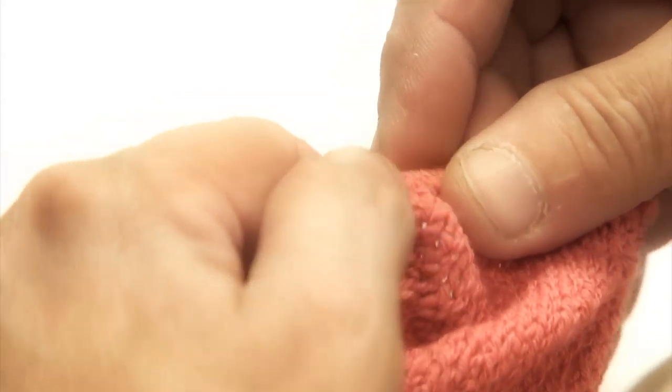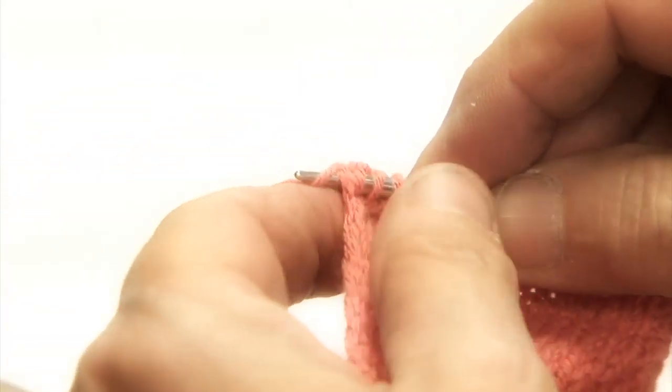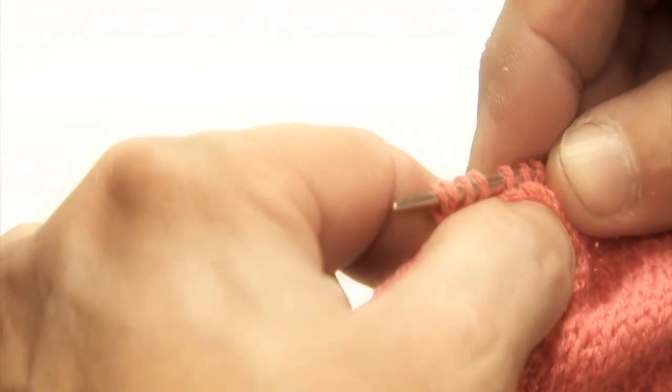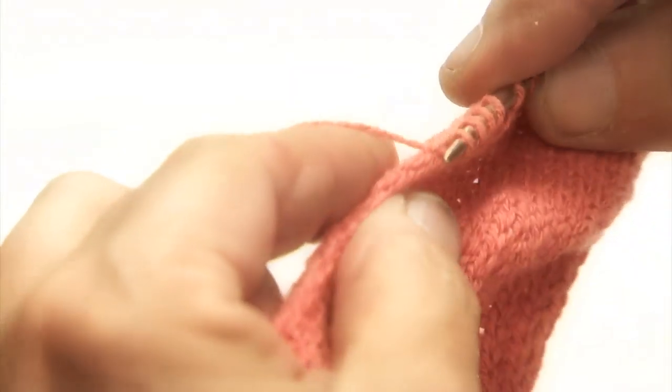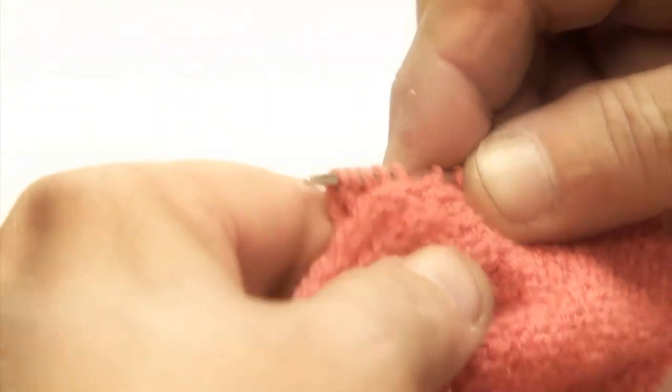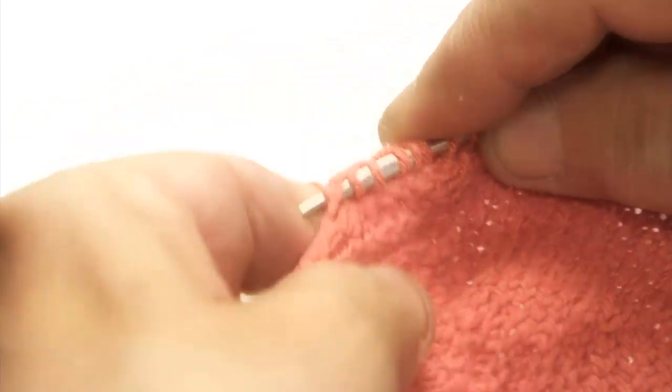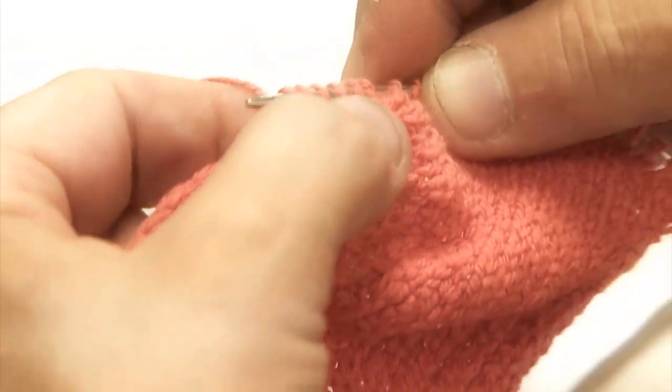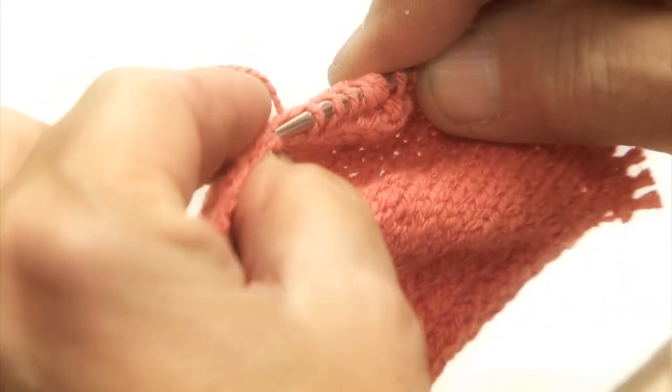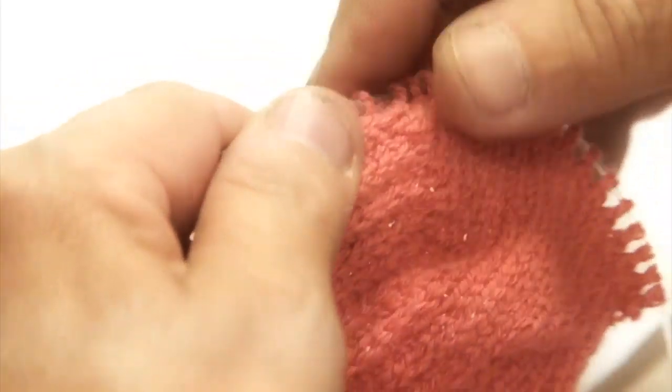Now, the important thing here is that your stitches are even looking, evenly distributed across this area of your heel. So if you feel you have a gap and you need to pick up one or two more, it's not a problem because we're going to be decreasing these stitches later on. So we're going to pick up 14 on this side.